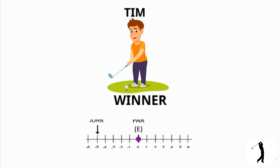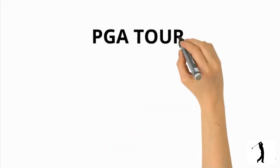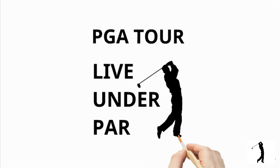You may imagine a number line with 0 in the centre as par or even, and negative numbers on the left-hand side as under par scores and positive numbers on the right-hand side as over par scores. In short, a negative score in golf is good. Hence, the tagline of the PGA Tour is Live Under Par.